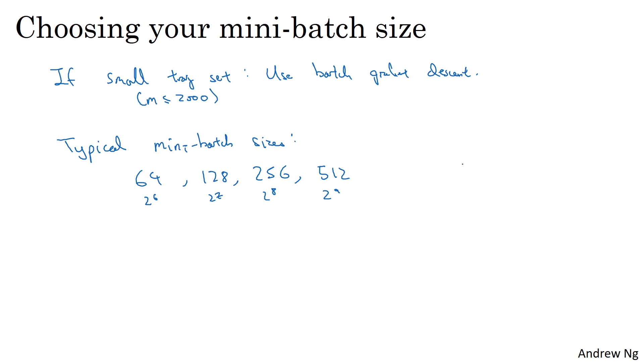I know that in the previous video I used a mini-batch size of 1000. If you really wanted to do that, I would recommend you just use 1024, which is 2 to the power of 10. And you do see mini-batch sizes of size 1024, though it is a bit more rare. This range of mini-batch size is a little bit more common.